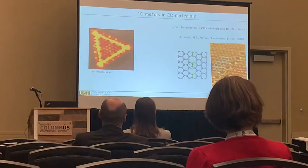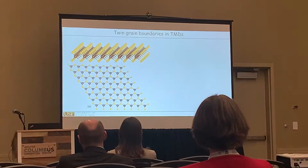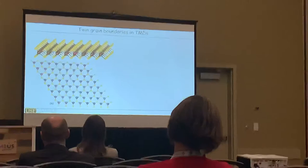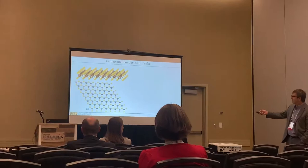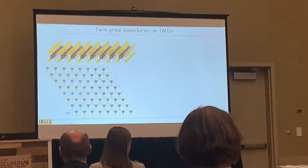Just a brief reminder of how TMDs generally look: you have a metal layer, a transition metal layer, sandwiched between two layers of dichalcogenides. It's a two-dimensional material, and if you look from the top, it has a hexagonal pattern, where the transition metal and the two chalcogenides from the top and bottom of the structure overlap, forming this hexagonal pattern.